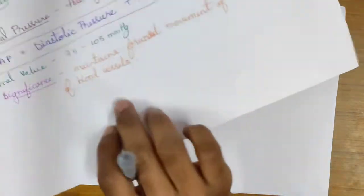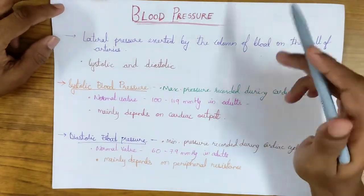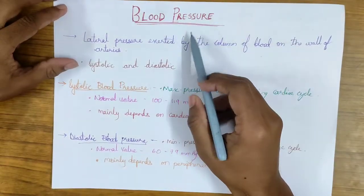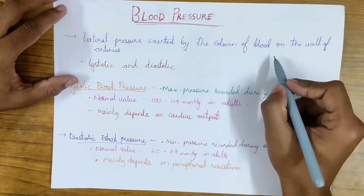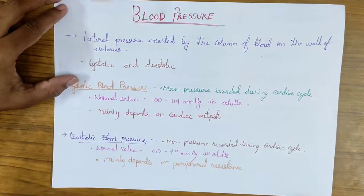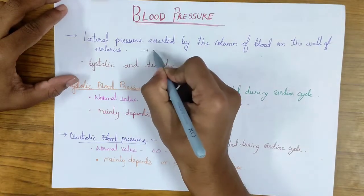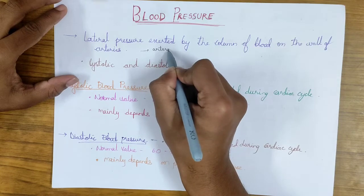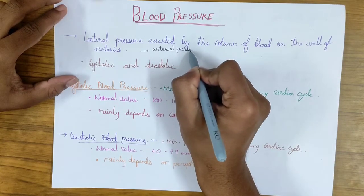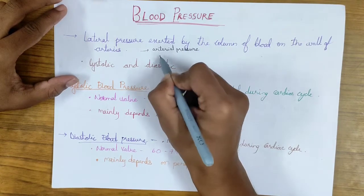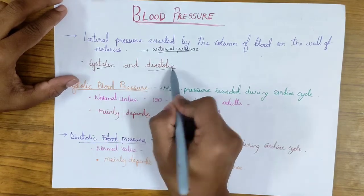Before starting this video, if you haven't subscribed to the channel please subscribe for more videos like this. So let's start. What is blood pressure? It is the lateral pressure exerted by the column of blood on the wall of the arteries. It is also called arterial pressure. This blood pressure can be divided into systolic blood pressure and diastolic blood pressure depending on the phase of the cardiac cycle.